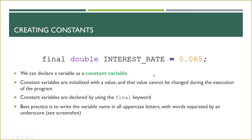Moving on to creating constants. We can declare a variable as a constant variable, which means we declare it, give it a value, and no matter what during the program, that value is not going to change. That would be a variable you use throughout your whole program that you know you're never going to change. We do that by using the final keyword before our data type. Best practice is to write the variable name in all uppercase, and because we can't do camel case with all caps, we put underscores between words.